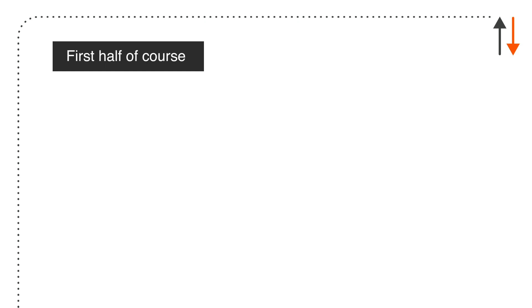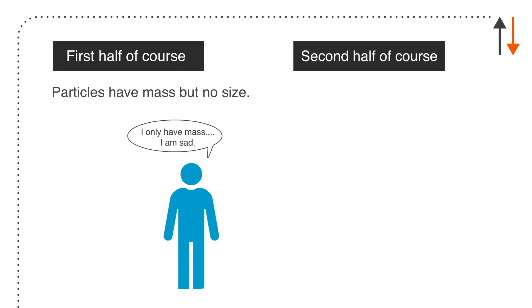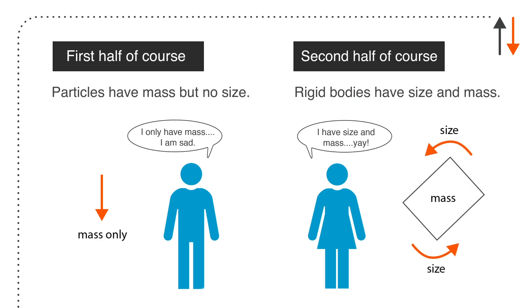One thing to keep in mind as you go through the course: in the first half — roughly late January when you've covered the initial material in kinetics — particles are all we talk about, and they have mass but no size. For the second half of the course, we're going to have objects that have both size and mass, going from particles to rigid bodies.